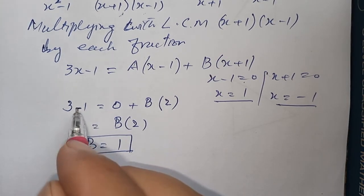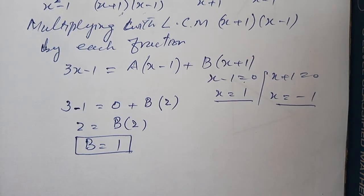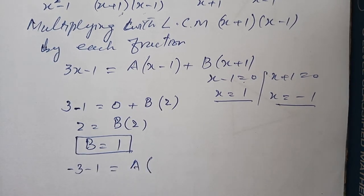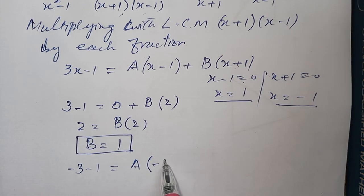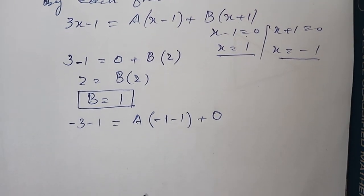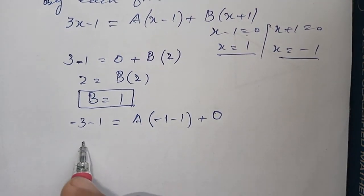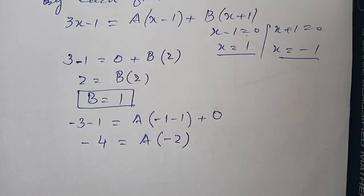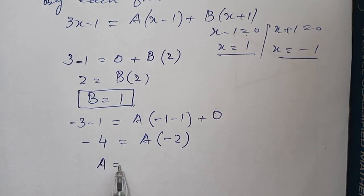उसके बाद आपने x का value लेना है minus 1. तो यह हो जाएगा आपके पास minus 3 minus 1 is equal to A into minus 1 plus B, पूरे का पूरा 0 हो जाएगा. उसके पास हो जाएगा A का answer मुझे मिलेगा 2.